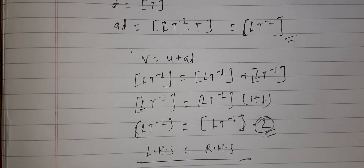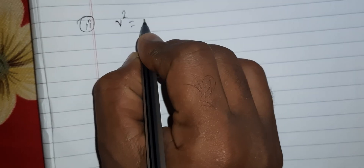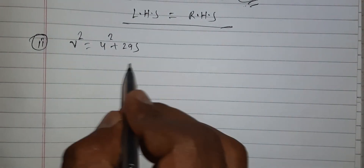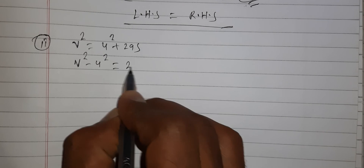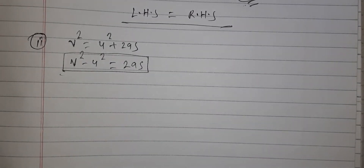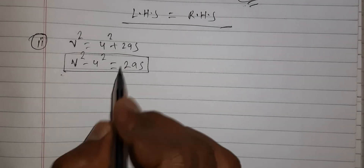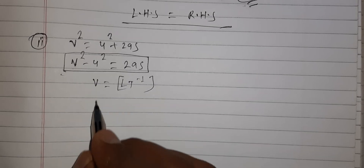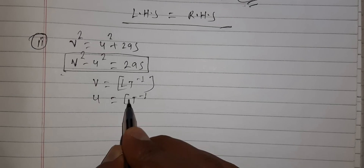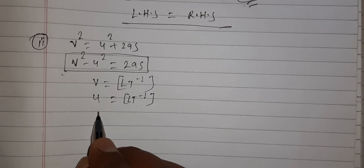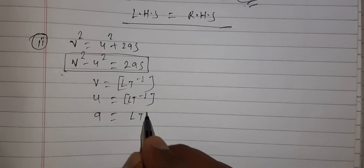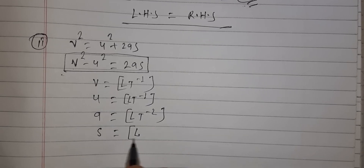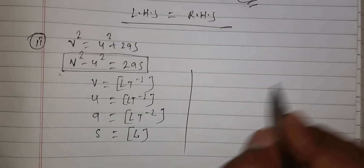Now let's take another example. Suppose we have v² = u² + 2as, which can also be written as v² − u² = 2as. We need to check whether this equation is dimensionally correct or not. In this equation, v and u both represent velocity so their dimensional formula is LT⁻¹. The term a represents acceleration with dimensional formula LT⁻², and s represents length so its dimensional formula is L.